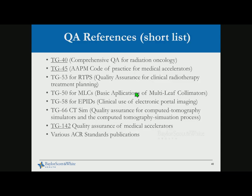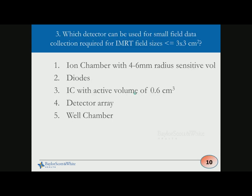Putting it all together, there are many QA recommendations to go through at acceptance testing. Since there are no clear acceptance testing tolerance guidelines, we must rely on periodic QA recommendations from various task groups. For example, a respiratory gating system added to your LINAC requires going through its dedicated task group report. This is a very short list of task groups one has to actually go through.